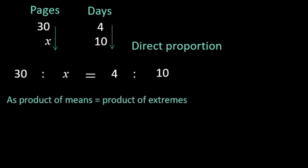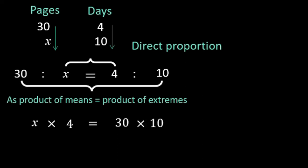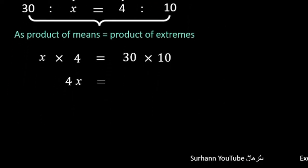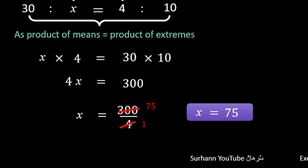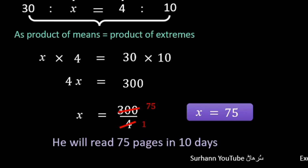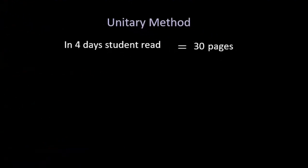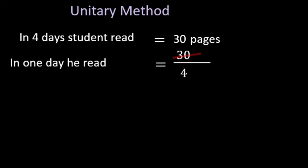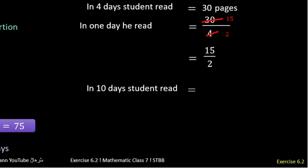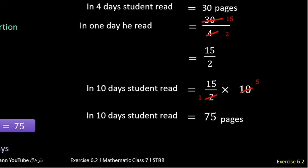Product of means equals product of extremes: x × 4 = 30 × 10. Solving this gives x = 75, so the student will read 75 pages in 10 days. By the unitary method: in 4 days the student reads 30 pages, so in 1 day he reads 30 ÷ 4 = 7.5 pages. To find pages in 10 days, multiply 10 by 7.5, giving 75 pages. The student will read 75 pages in 10 days.